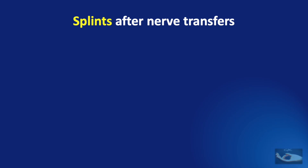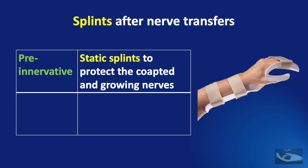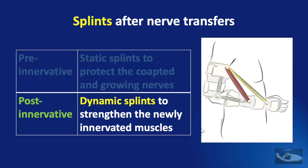The role of splints after nerve transfers is quite limited. In the pre-innervative phase, static splints are used to protect the coapted and growing nerves. In the post-innervative phase, dynamic splints can be used to strengthen the newly innervated muscles.